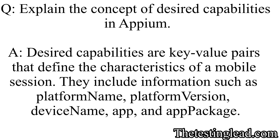Explain the concept of desired capabilities in Appium. Desired capabilities are key-value pairs that define the characteristics of a mobile session. They include information such as platform name, platform version, device name, app, and app package.